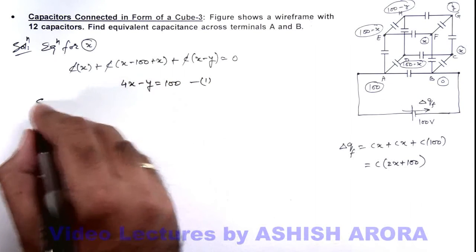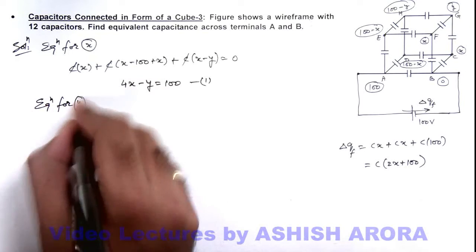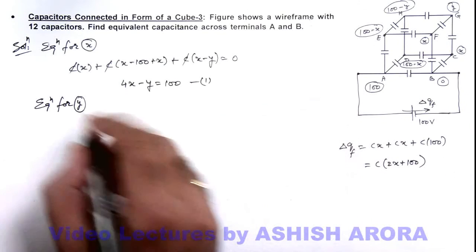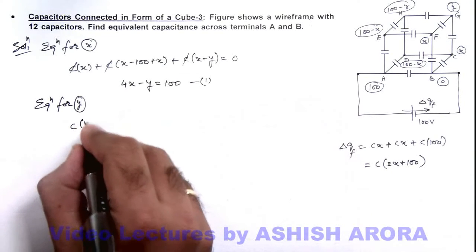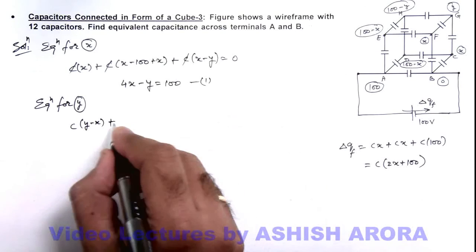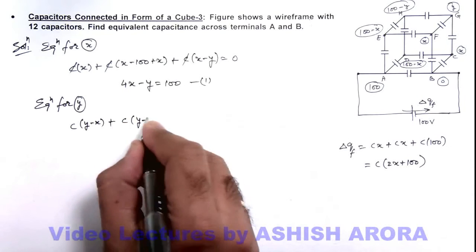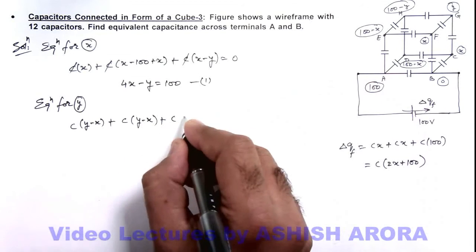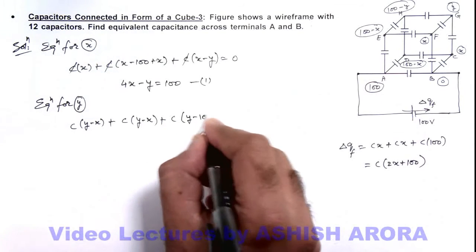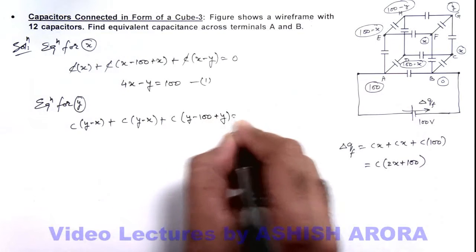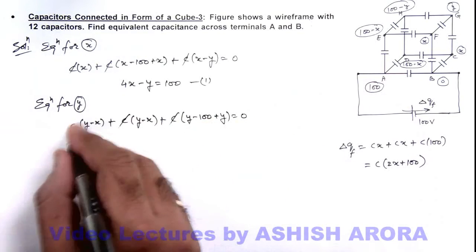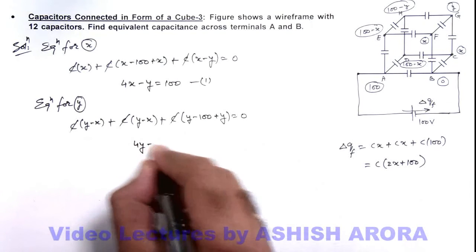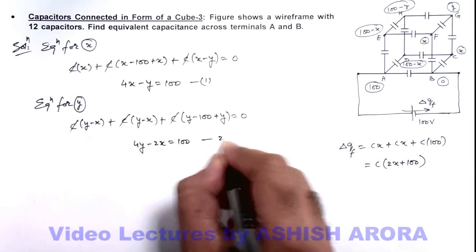And now if we write equation for y. For y, again there are three plates connected to y so equation we can write C multiplied by y minus x, plus for this again C multiplied by y minus x, plus for this it is C multiplied by y minus 100 plus y is equal to zero. C gets cancelled out and on simplifying we are getting 4y minus 2x is equal to 100, say this is our equation 2.